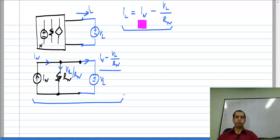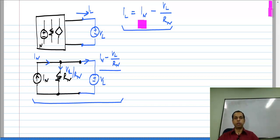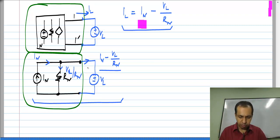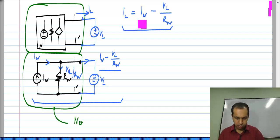If you recall, with the Thevenin equivalent we had V_L equal to V_TH minus I_L times R_TH, and we have a similar equation here. There we emulated the output voltage using a voltage V_TH in series with resistance R_TH. Here we emulate the output current I_L using a current source I_N in parallel with resistance R_N, which also equals R_TH. This circuit is the Norton equivalent of network N at terminals 1 and 1 prime.